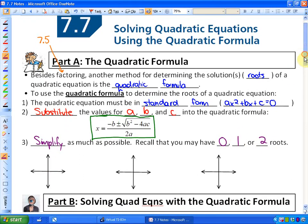Thinking graphically in orange here, roots are also called x-intercepts or zeros. It's possible to have no roots, one root if the vertex is right on the x-axis, or two roots. Let's look at how to actually use the quadratic formula to solve equations.